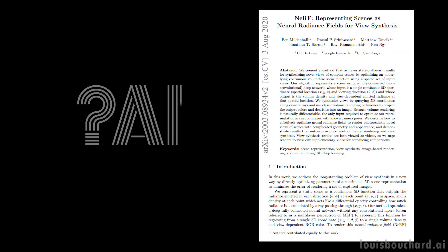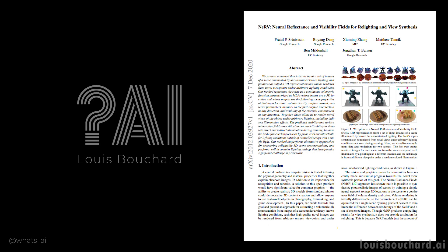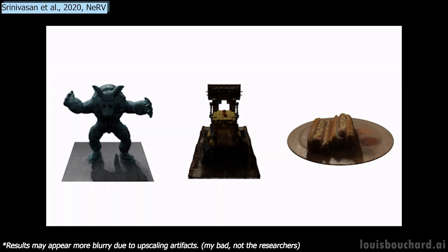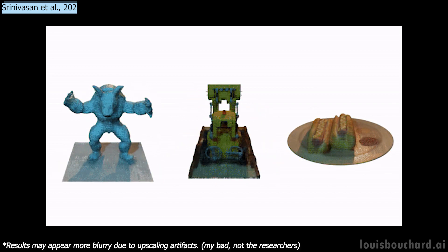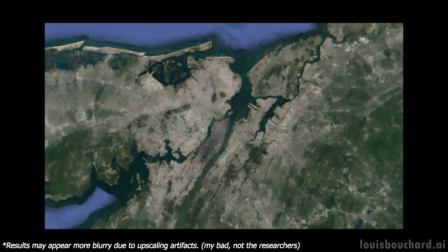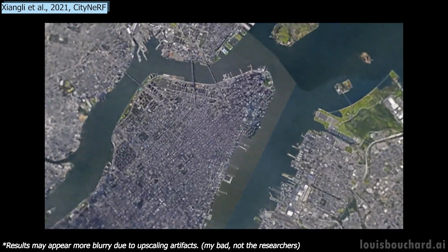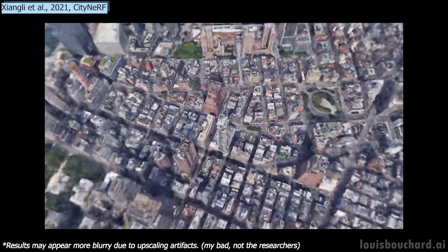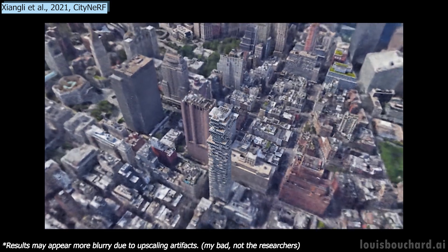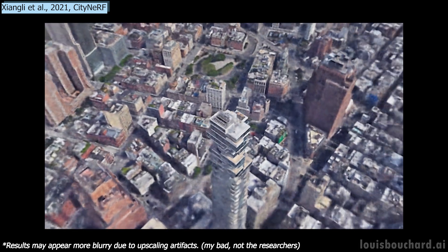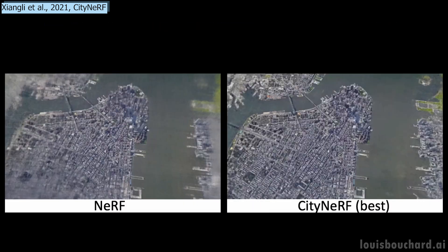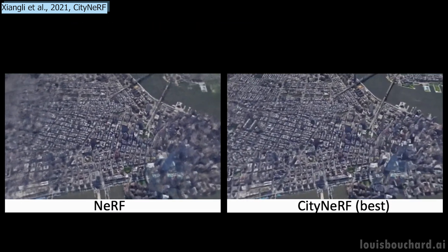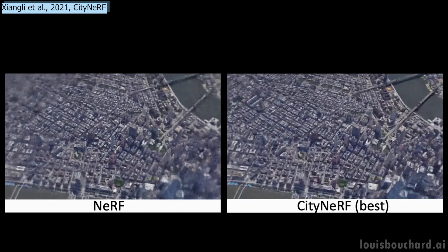Last year, we first saw NeRF, then NERV and other networks able to create 3D models and small scenes from images using artificial intelligence. Now, we are taking a small step and generating a bit more complex models — whole cities. Yes, you've heard that right. This week's paper is about generating city-scale 3D scenes with high-quality details at any scale. It works from satellite view to ground level with a single model. How amazing is that? We went from one object that looked okay to a whole city in a year. What's next? I can't even imagine.